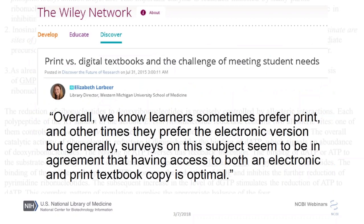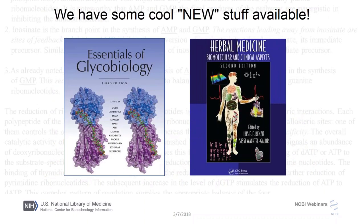The cost factor as well as the platform for textbooks are both important factors in student usage. A blog post by the library director of the Western Michigan University School of Medicine concluded that learners sometimes prefer print and other times electronic, but surveys generally agree that having access to both an electronic and print textbook copy is optimal. At the NCBI Bookshelf, we've had new textbooks added to our inventory in recent years. One of them, The Essentials of Glycobiology, was unique in that it was conceived from the outset by its editors, publisher, and NCBI as a book published simultaneously in print by Cold Spring Harbor Press and made available in full text online at the NCBI Bookshelf, serving as a worldwide model for an open education vision.